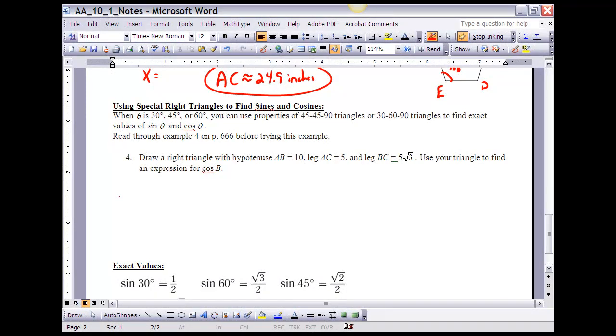Number 4 here says draw the right triangle with a hypotenuse AB of 10 and a leg AC of 5. So I've got this triangle, I've got a hypotenuse of 10, call that AB, and we have a leg AC of 5, and a third leg BC of 5 square root of 3. It says use your triangle to find an expression for the cosine of B. Once again this is a right triangle, so I can say the cosine of B is equal to, here's angle B, cosine is adjacent compared to hypotenuse, so 5 square root of 3 over 10. Well if I look at 5 square root of 3 over 10, that's equal to the square root of 3 over 2.